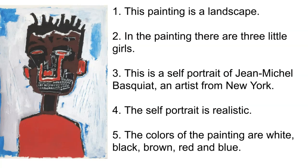To start, divide students into groups and have each assigned to one of the paintings hanging in the room. Have them make five true or false statements about their painting. Then the teacher shows the painting at the front of the room, and the students in their groups take turns reading their true-false statements about the painting. In their journals, the other students write whether the statement is true or false.